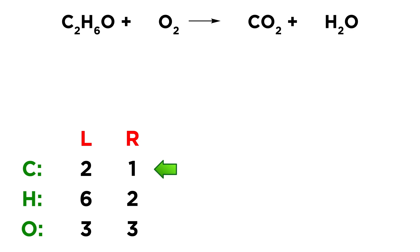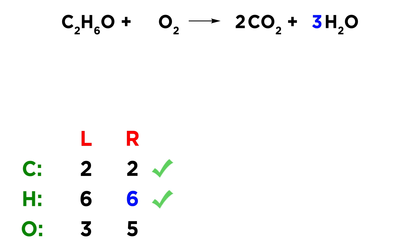Let's start with carbon. We have two on the left and one on the right, so we put a two next to CO2, giving us two carbon atoms on the right. Carbon is now balanced. However, we've also changed the number of oxygen atoms on the right — we have four from CO2 (two CO2 molecules, each with two oxygens) plus one from water, giving us five oxygen atoms on the right. Now let's balance hydrogen: we have six on the left and two on the right, so we put a three next to water, giving us three water molecules with two hydrogen atoms each — six hydrogen atoms on the right — and hydrogen is balanced.